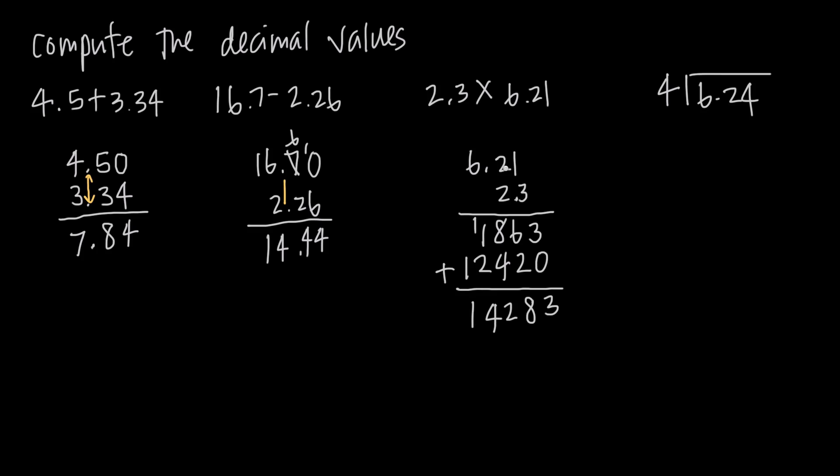We completely ignored our decimals. But for our final answer, we need to put a decimal back in. And the way that we do that is we count the number of places that we have behind the decimal. So here we have 1, 2 places behind the decimal. Here we have 1 place behind the decimal. That's 3 total places behind the decimal.